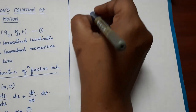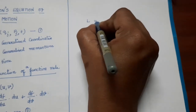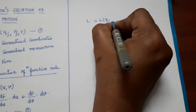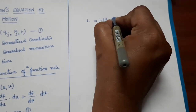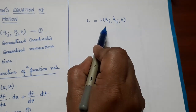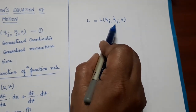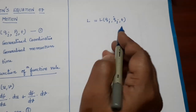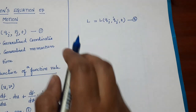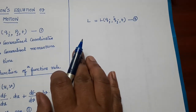We also know the Lagrangian function L is a function of qj, qj_dot, and time t, where qj's are generalized coordinates, qj_dots are generalized velocities, and t is time. Let us take this as equation 3 and find its differential.